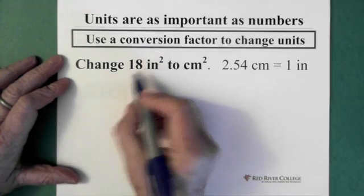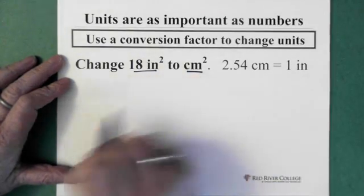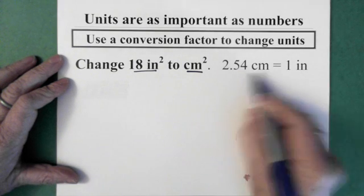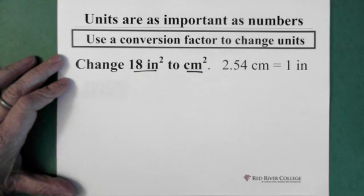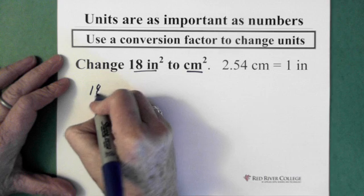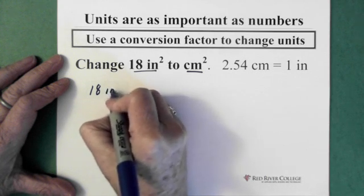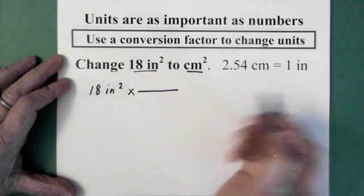In this question, we start with 18 inches squared and we want to go to centimeters squared. And the conversion factor that we're going to use is 2.54 centimeters, which equals 1 inch. So, I start with what I have, which is my 18 inches squared. And I put my multiplication and my line.